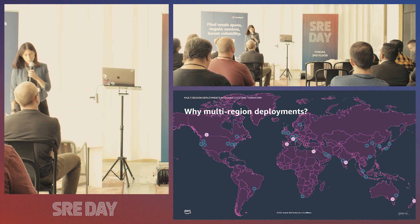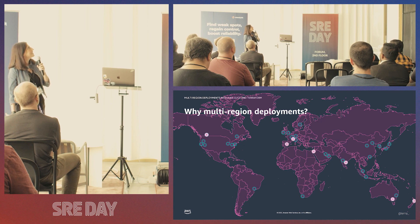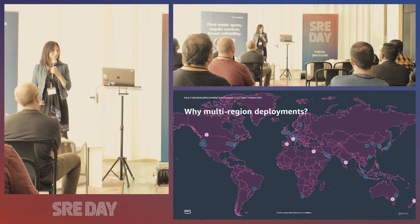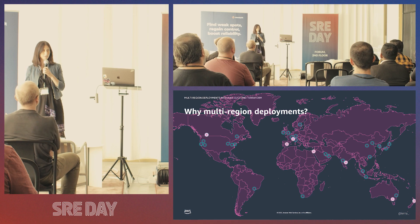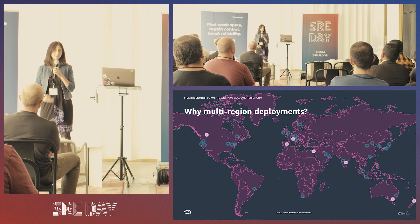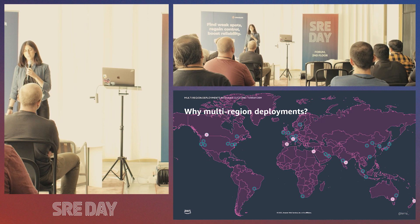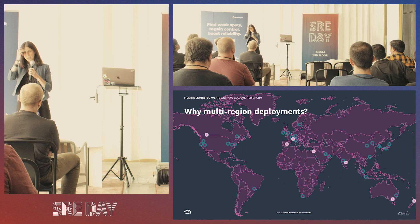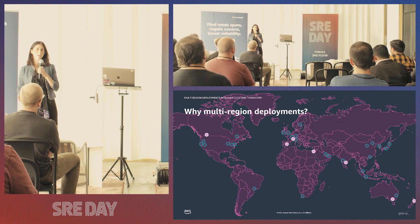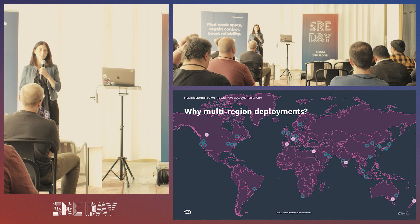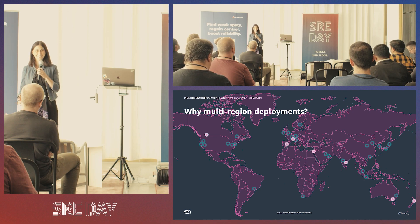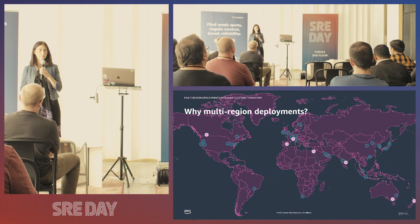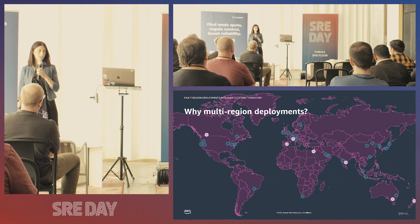That slide shows that there are 27 AWS regions today around the world, and inside each region there are two or more availability zones. Availability zones contain at least one or more data centers inside of them. Typically when deploying in a single region, you spread your workloads across multiple availability zones, gaining redundancy and resiliency, and that is where you get started as a first step.